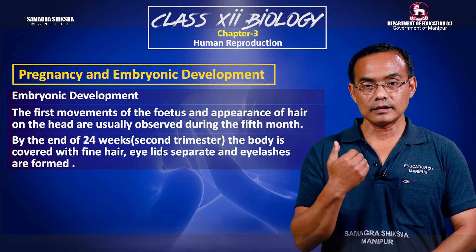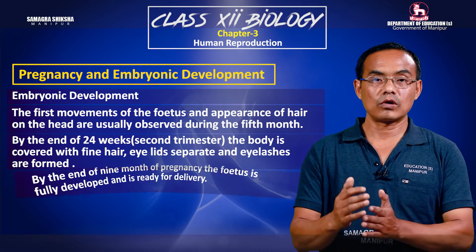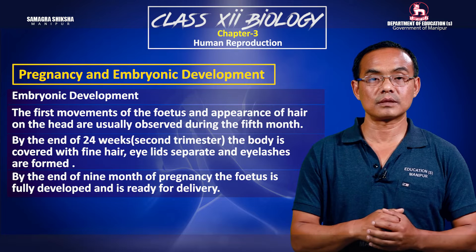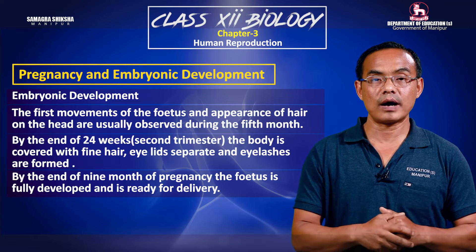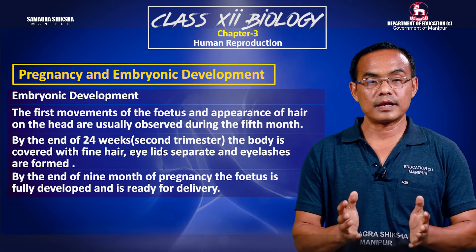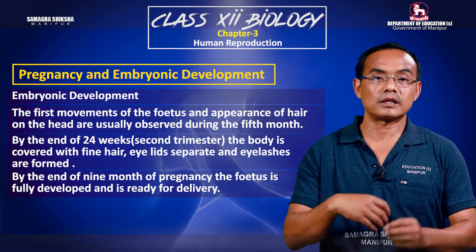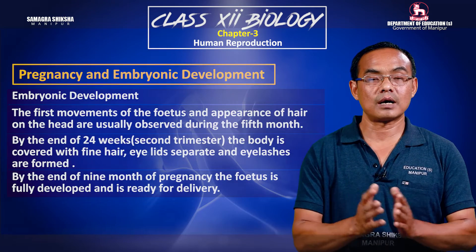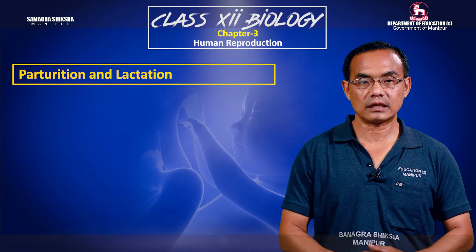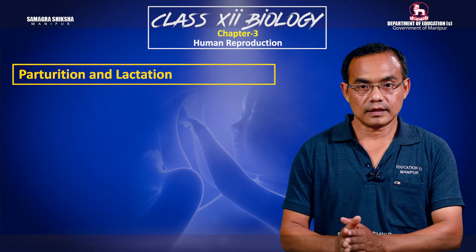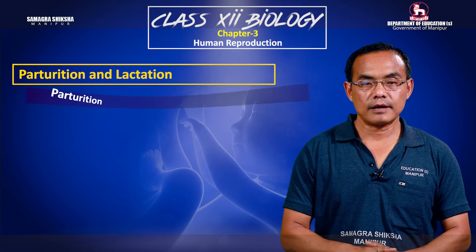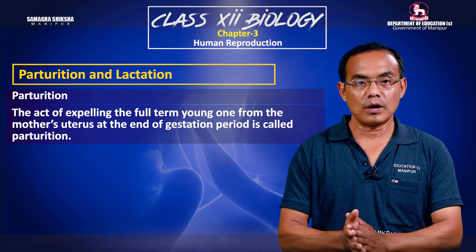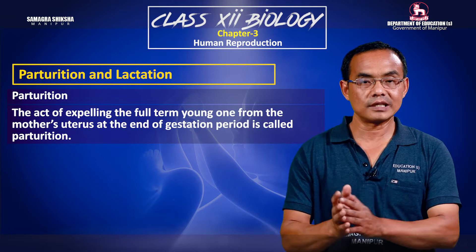At birth, after about 40 weeks of gestation, the embryo completes development. Parturition and lactation are important processes. Parturition involves the delivery of the embryo and fetus from the uterus.